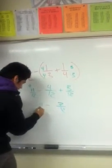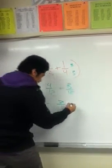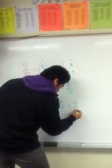Bring this down. Then you subtract these, and you get 4 over 12.